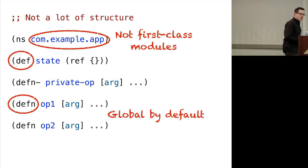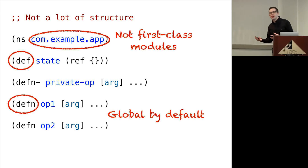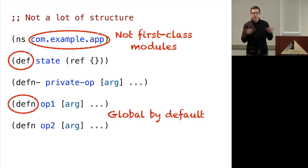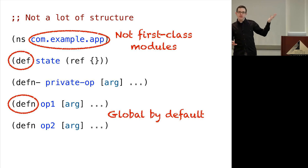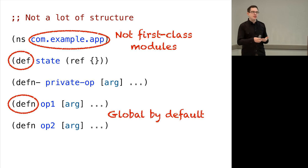Another thing we discover very quickly about Clojure is that almost everything is global by default. If you're creating something in an object-oriented language, you're creating a class, so it's sort of automatically encapsulated inside the class. But with Clojure, the first thing we learn how to do is def stuff. So if we need something, the thing we're going to do is probably def it — and that applies to functions, but sometimes it also ends up applying to state, things like atoms and refs that hold the state in our application.